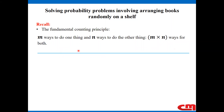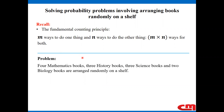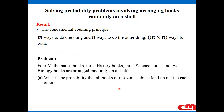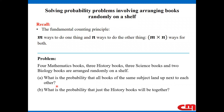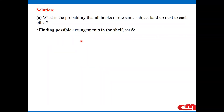Let us analyze the following problem: four mathematics books, three history books, three science books, and two biology books are arranged randomly on a shelf. The questions are: (a) what is the probability that all books of the same subject land up next to each other, and (b) what is the probability that just the history books will be together?